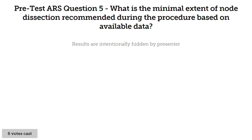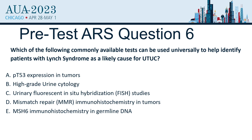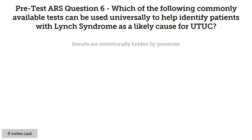One more question: which of the following tests can be universally used to identify Lynch syndrome in patients with upper tract disease? Would you look at P53, a genomic marker? High-grade urine cytology? Urinary fluorescence FISH studies? Mismatch repair immunohistochemistry for tumors? Or just MSH6 as a single gene for germline DNA testing?